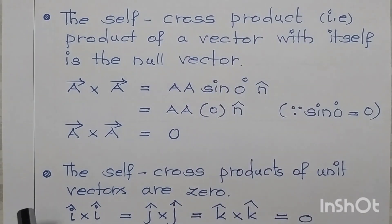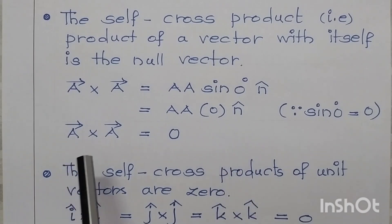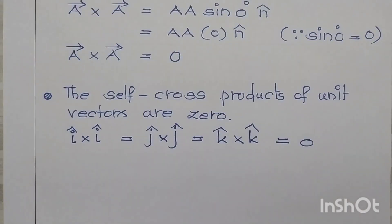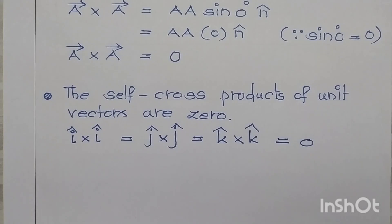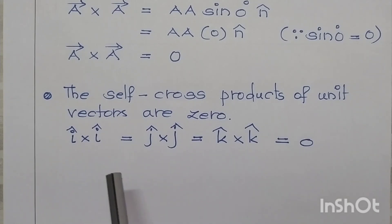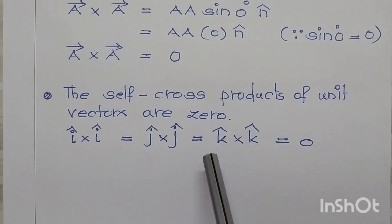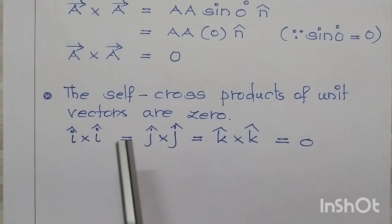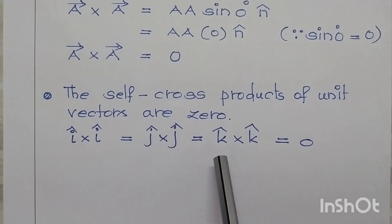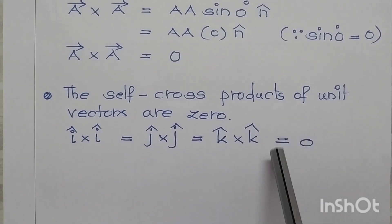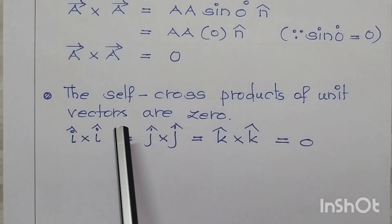In place of A vector cross A vector, we can also write B vector cross B vector, which also becomes 0. This is the fourth property. Now the fifth property: taking the unit vectors — î in the x-direction, ĵ in the y-direction, and k̂ in the z-direction — the self-cross products of unit vectors are: î cross î, or ĵ cross ĵ, or k̂ cross k̂ all become 0.